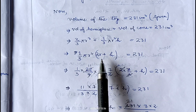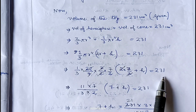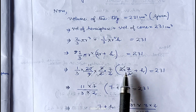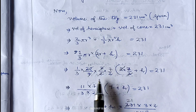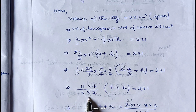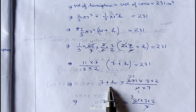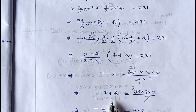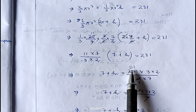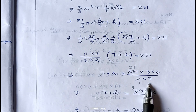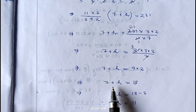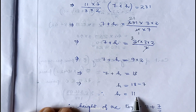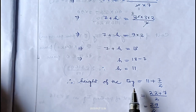Substituting: (1/3) into (22/7) into (7/2) squared into (2 into 7/2 plus h) equals 231. Cancelling the 2s, 7s, and other common factors, we get 11 into 7 over (3 into 2) into (7 plus h) equals 231. Solving, 7 plus h equals 231 into 6 divided by 77, which gives 7 plus h equals 18, so h equals 11. Therefore height of the conical part is 11 centimeter.